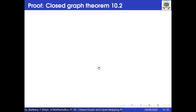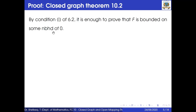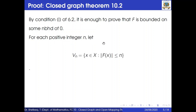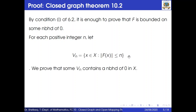In order to show f is continuous, it is enough to prove that f is bounded on some neighborhood of 0. This is by condition 1 of Theorem 6.2. So for each positive integer n, let Vn equal the set of all x belonging to X such that the norm of f(x) is less than or equal to n. Now we prove that some Vn contains a neighborhood of 0.